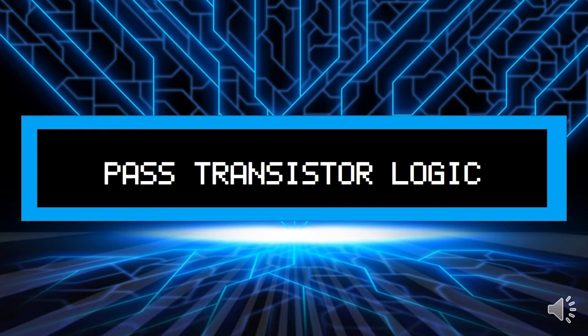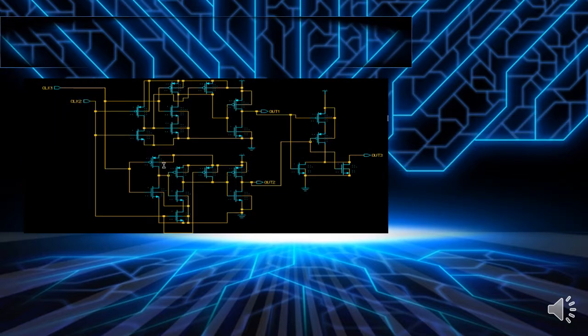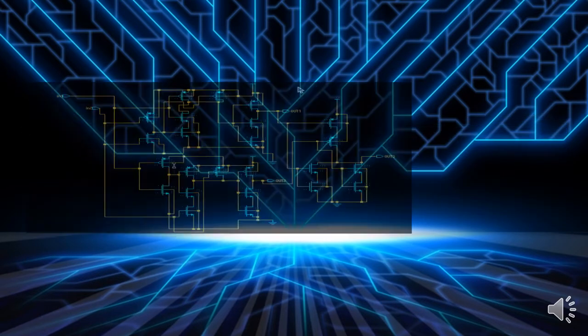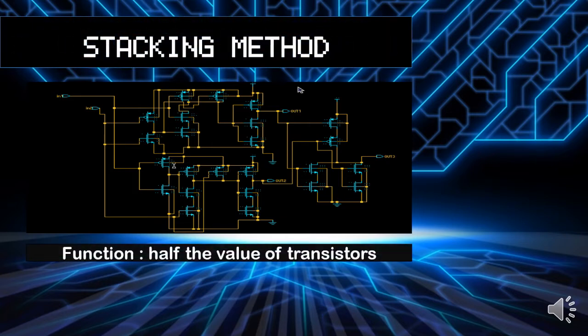One of the low power design techniques is pass transistor logic. We use pass transistor logic because its function is to reduce the number of transistors, so the number of transistors will be reduced to a certain number and the area will be reduced from the original. The stacking method technique functions to halve the value of the transistor. For example, if the value of the transistor is 2 micron, it will reduce to 1 micron, so the value will be reduced significantly.